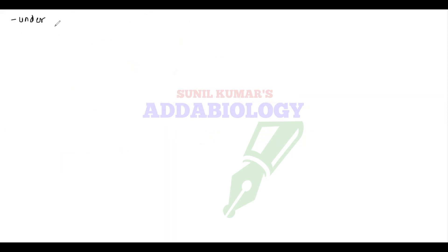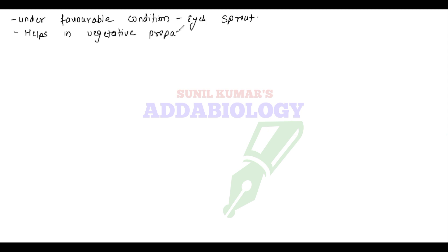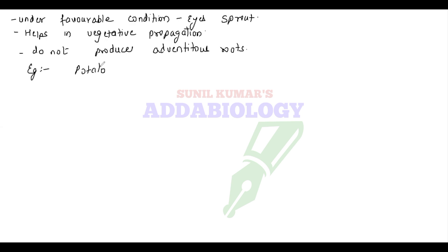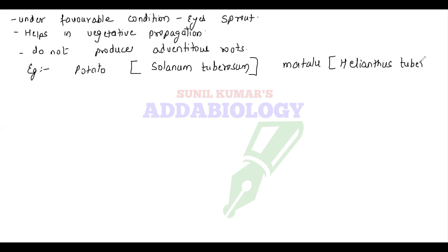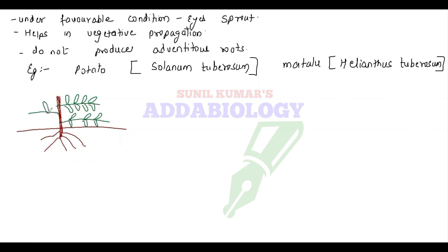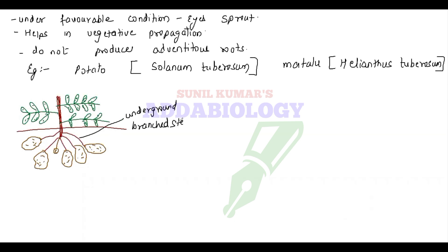The nodes with axillary buds are called the 'eye'. The most popular example is potato — Solanum tuberosum. Under favorable conditions the eye sprouts help in vegetative propagation. In the potato plant there are no adventitious roots. Under favorable conditions, when leaves are present, the plant does photosynthesis and food synthesized is transported to the tip of the stem below ground, which then swells to store lots of food.